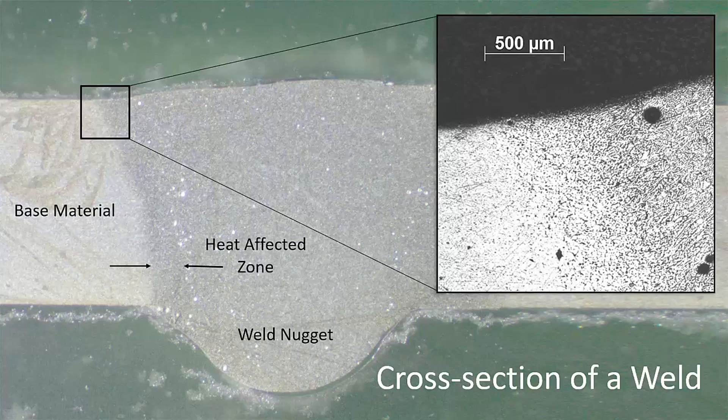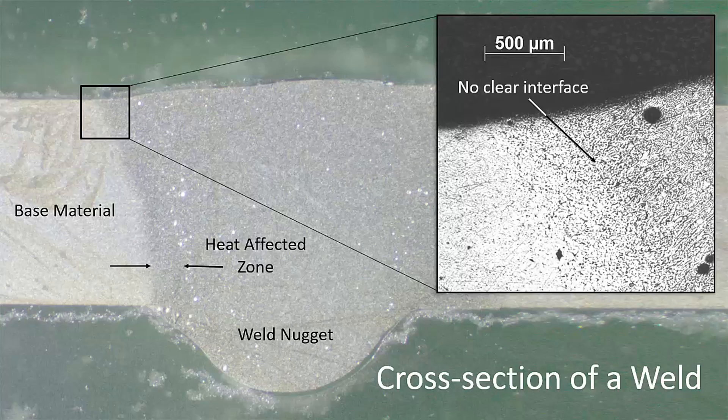As can be seen from the following section of a weld, it is possible to generally highlight these regions. However, a clear interface between them does not exist. The materials effectively fuse together to form one material, with local regions where the material properties, such as strength, may be affected due to the welding process.